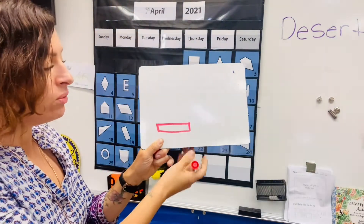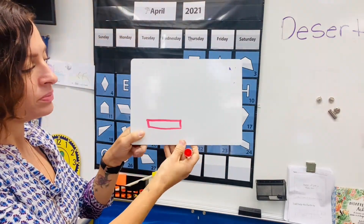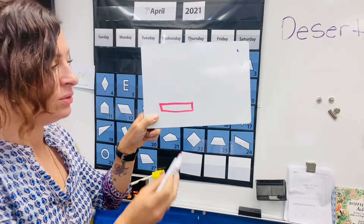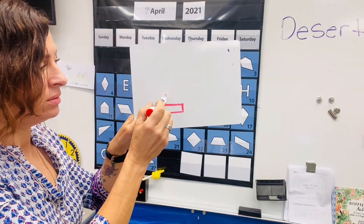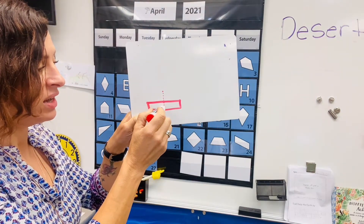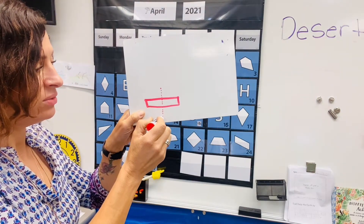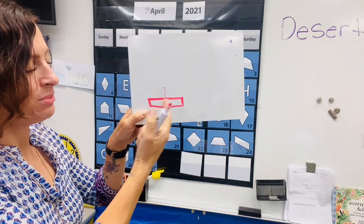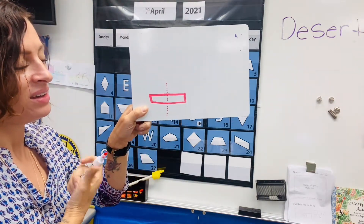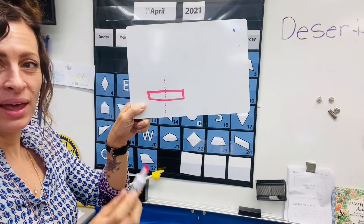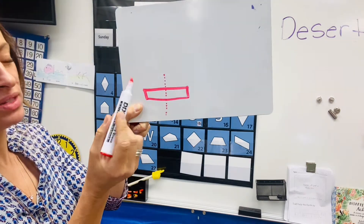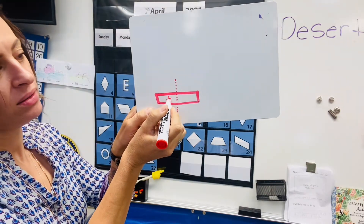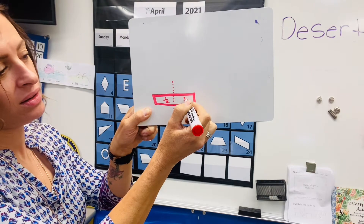So if you were to make this symmetrical, how could you do that? You could draw the line directly down like that, and then this side is the same as this side. And when we do that, now we have two halves — one half here and one half here.